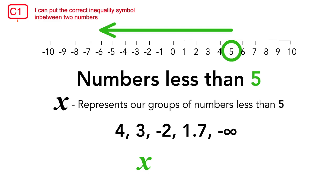So x could be 4, 3, negative 2, 1.7, or even negative infinity. These are all examples of numbers that are less than 5.